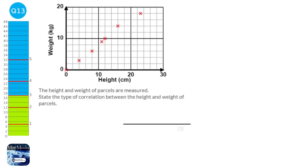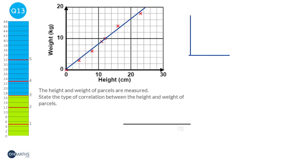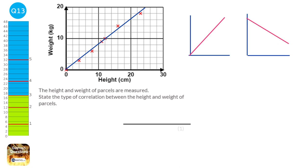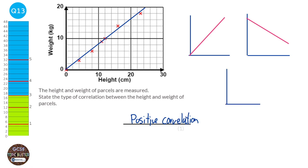We can quickly draw a line of best fit. If our line of best fit is increasing, we say the data has a positive correlation. If the line of best fit is decreasing, we say it's a negative correlation. If the data is all over the place with points everywhere, we say that's no correlation.